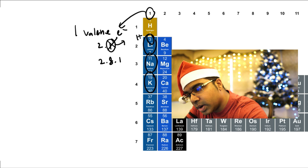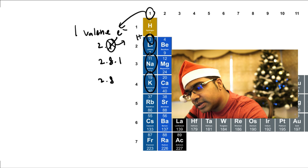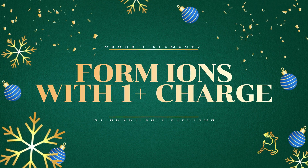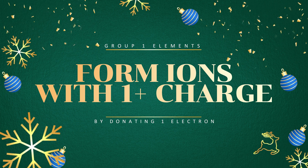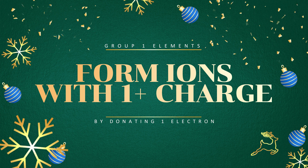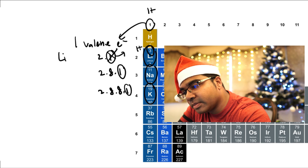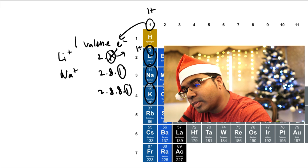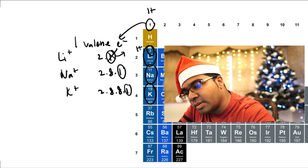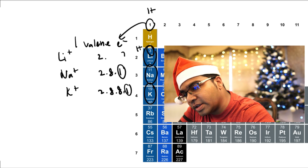Sodium has an arrangement of 2, 8, 1 and potassium is 2, 8, 8, 1. All these elements have one valence electron that needs to be given away in order to form an ion. And so, group 1 elements will form a 1+ charge. Lithium ion will be Li+, Na+, and K+ — each losing their one valence electron.